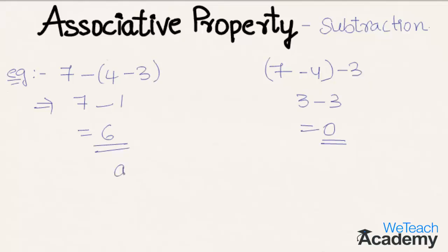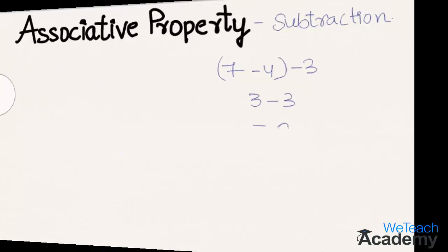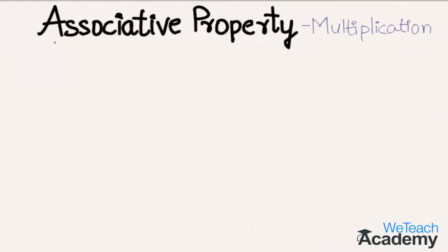This can be represented as (a minus b) minus c is not equal to a minus (b minus c). So associative property of subtraction is not a closed operation.